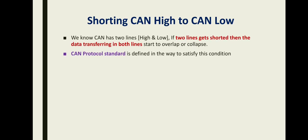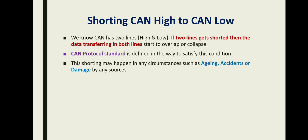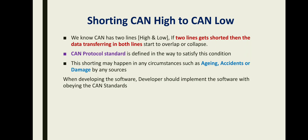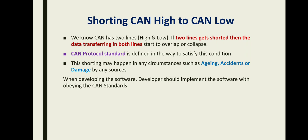The CAN protocol standard is defined to handle this condition. Shorting may happen due to aging, accidents, or damage from any source. When developing software, the developer should implement the software obeying the CAN standards — that is, whenever the two lines are shorted, the system should go bus off. Testing the software at the system level ensures the software behaves as per the standard, even when embedded with hardware.